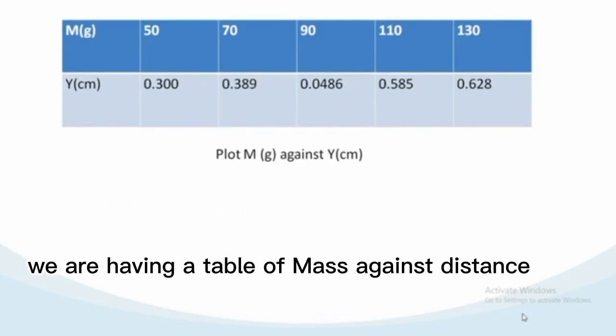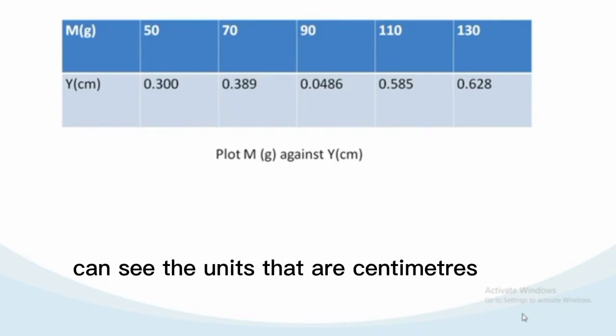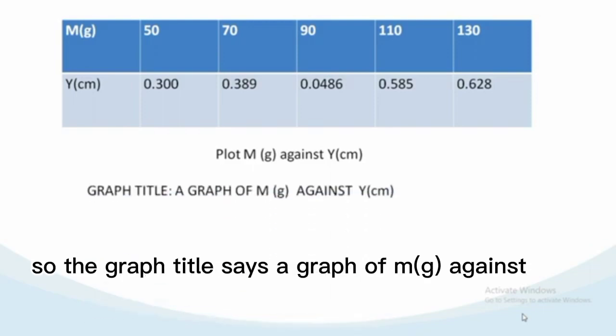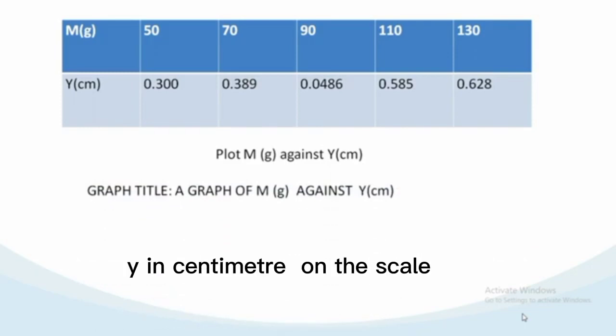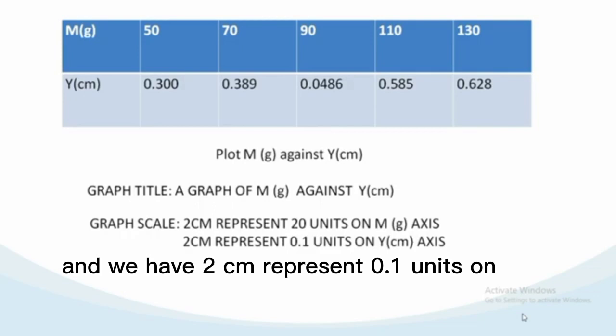We have a table of mass against distance. The distance unit is centimeter. Same thing, we have 50, 70, 90, 110, 130, and for Y values it's 0.3 up to 0.628 and so on. The graph title says: A graph of M in grams against Y in centimeters. The scale is two centimeters represent 20 units on M(g) axis, and two centimeters to represent 0.1 units on Y(cm) axis. You can see the scale given is going accordingly with the table values.